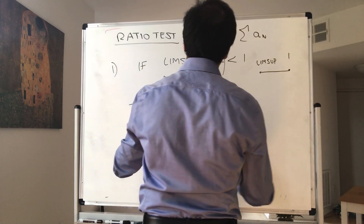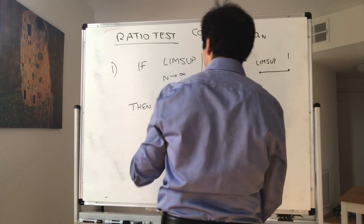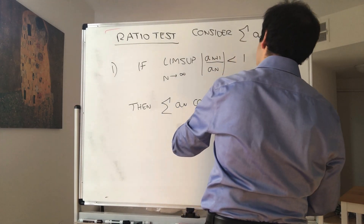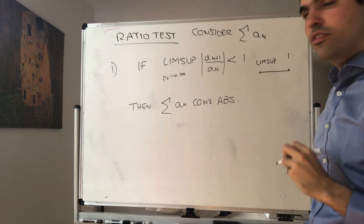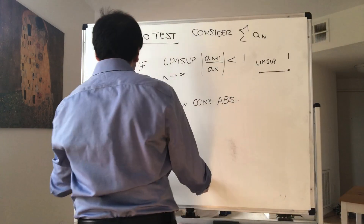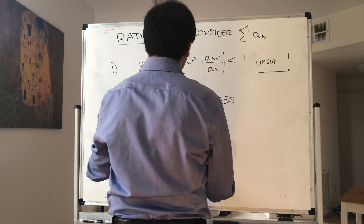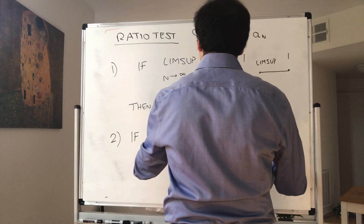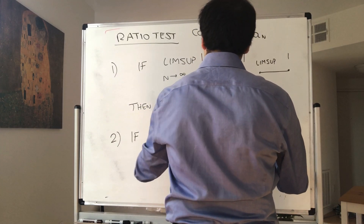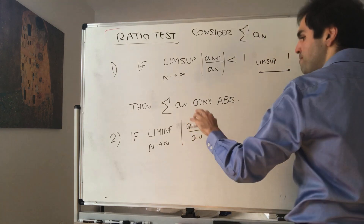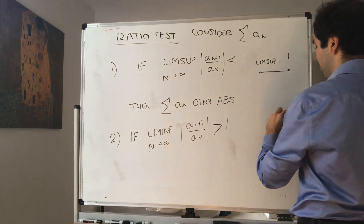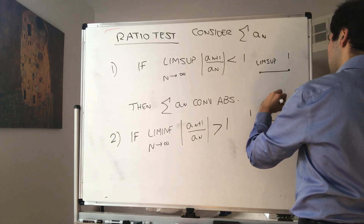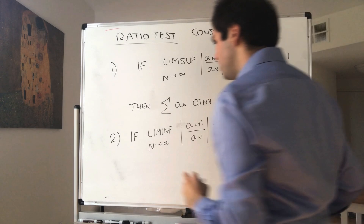The sum of a_n converges absolutely, meaning the sum of the absolute values converges. Moreover, if the best possible scenario — the lim inf as n goes to infinity of the ratio — is horrible, meaning greater than 1, that's the smallest possible limit being above 1, then the series diverges.